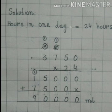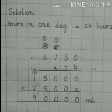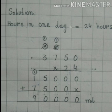Start हमेशा right side से करेंगे, मतलब units place से. First step में units place पर हमारे पास 4 है, so हम 3,750 को multiply करेंगे 4 से. 0 × 4 = 0, write 0. 5 × 4 = 20 — write 0 नीचे, and 2 carry करेंगे 100s place पर. 7 × 4 = 28, plus 2 carry = 30 — write 0 नीचे, and 3 carry करेंगे 1000s place पर. 3 × 4 = 12, plus 3 carry = 15 — write 15. So first step result: 15,000.